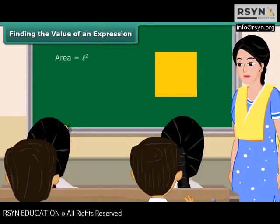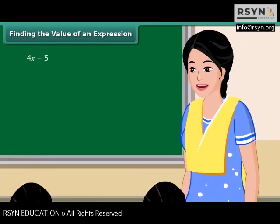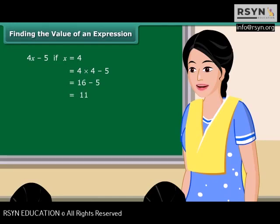Consider this square with area equal to L squared. If the value of L is equal to 4 cm, then the area would be 16 cm squared. There are many situations in which we need to find the value of an expression. Consider the expression 4X minus 5. If the value of X is equal to 4, then the expression equals 4 times 4 minus 5, which is 16 minus 5, that is 11. Similarly, if M is equal to 2, then the value of the expression M squared minus 2 will be equal to 2.